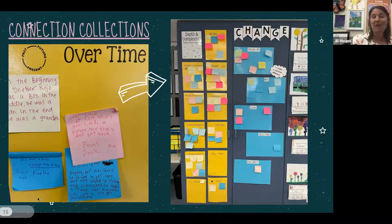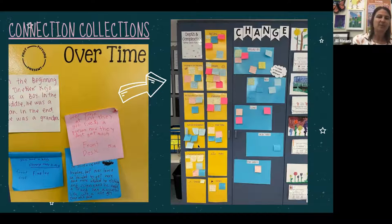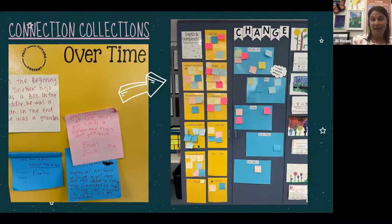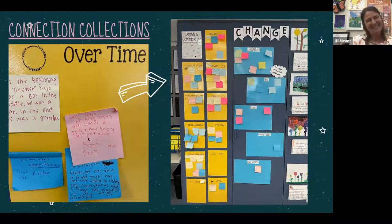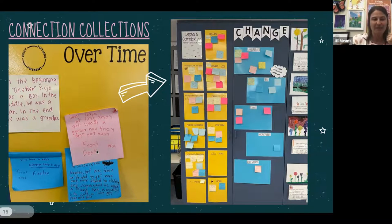Teachers create connection collection bulletin boards with sticky notes — when kids make a connection, they write it on a sticky note and post it under whichever prompt it connects with. Here's a close-up of one that says, under change over time: 'At first they got five dollars a person, now they don't get much' — a connection to change over time in the book Front Desk, which they're reading in class.